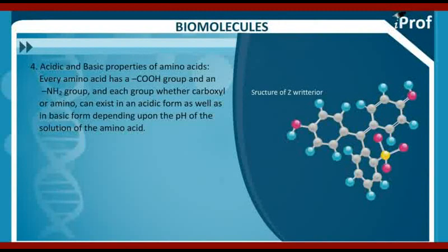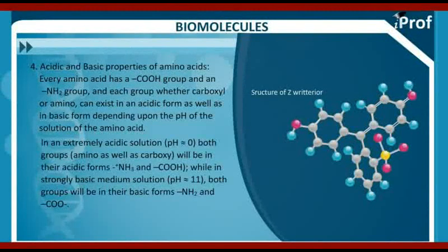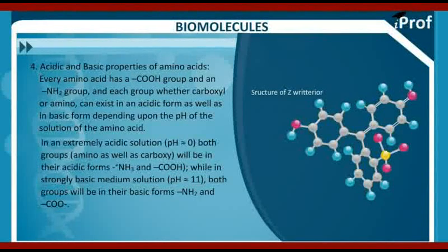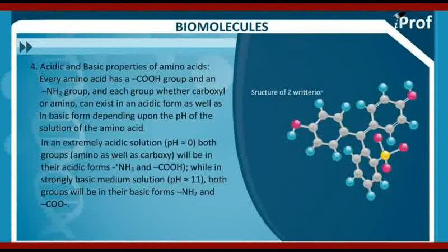In an extremely acidic solution where pH is more or less equal to 0, both groups — amino as well as carboxyl — will be in their acidic forms, such as NH3+ and COOH.